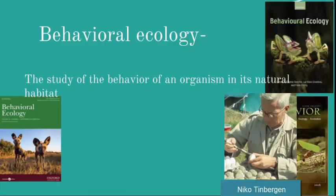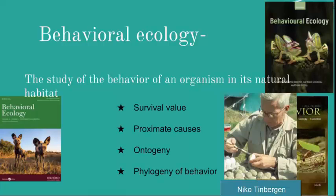Behavioral ecology emerged from the science of ethology. Niko Tinbergen made a baseline for this science, asking four main questions to address when studying animal behavior: survival value, proximate causes, ontogeny, and phylogeny. If an organism has a trait which provides a selective advantage — meaning it has adaptive significance in its environment — natural selection can potentially favor it.